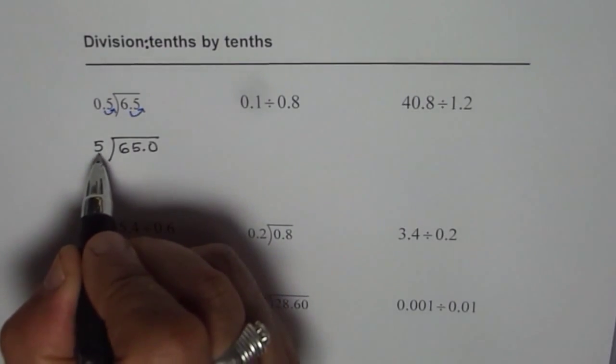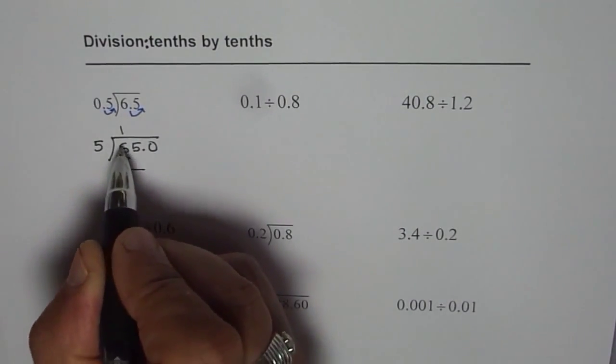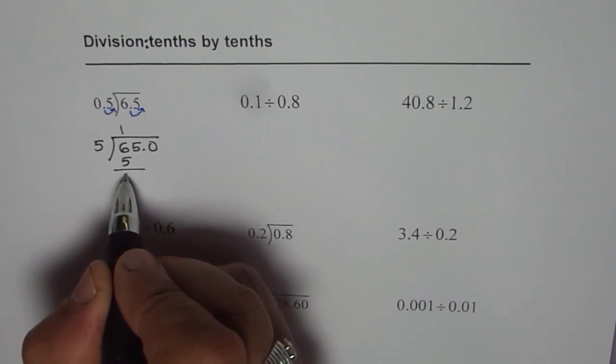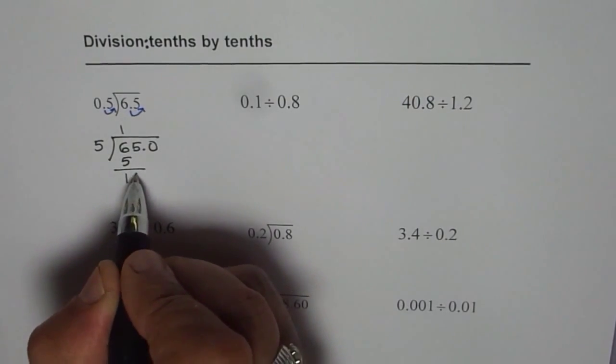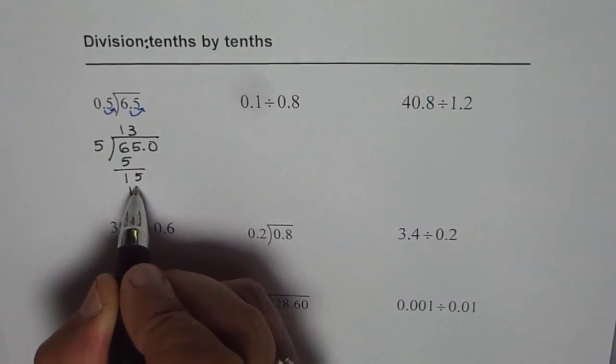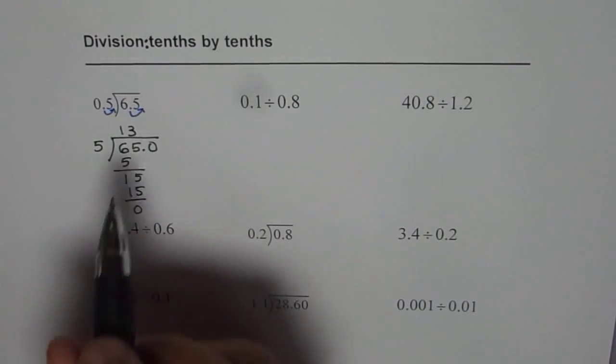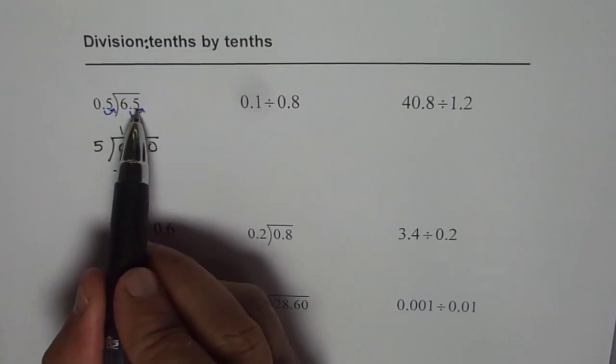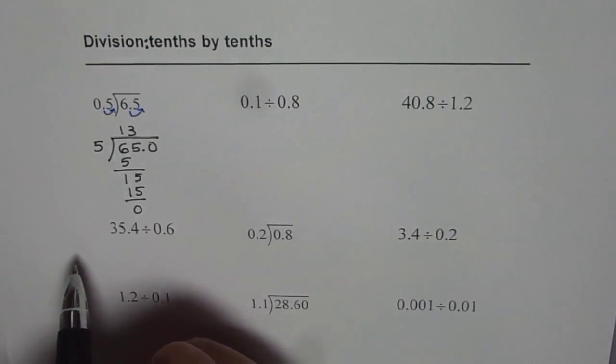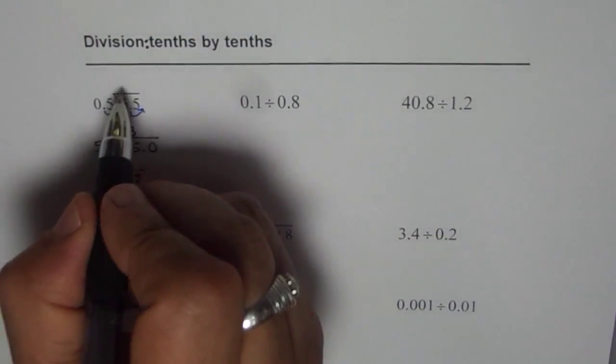6 will go one time by 5. So 5 times 1 is 5. Take away 5 from 6, you get 1. Now bring down 5. 15. 5 goes 3 times. 3 times is 15. Now since that is 0, we know 6.5 divided by 0.5 is 13. That is our answer. So we will get 13 here.